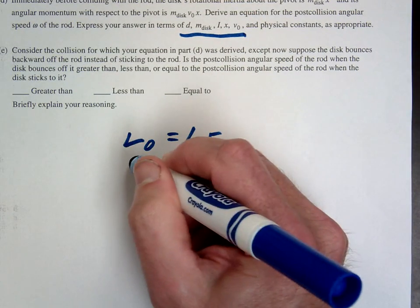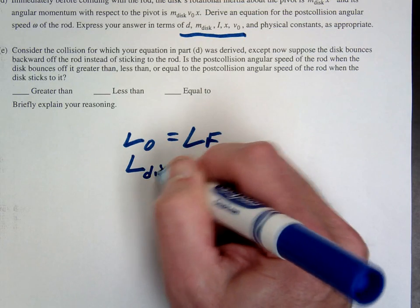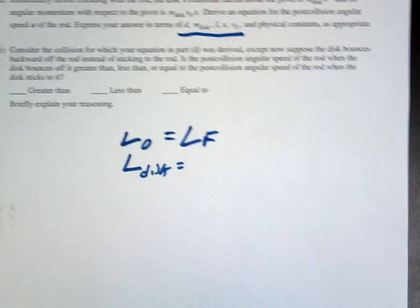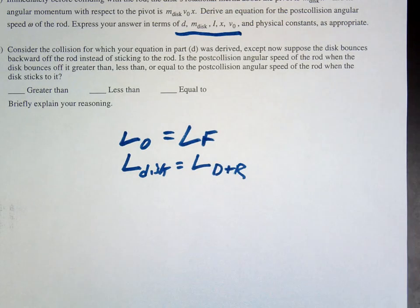The L initial in this is going to be the L of the disc. And then the L final is going to be the combination, right? So it's going to be the disc plus the rod together.